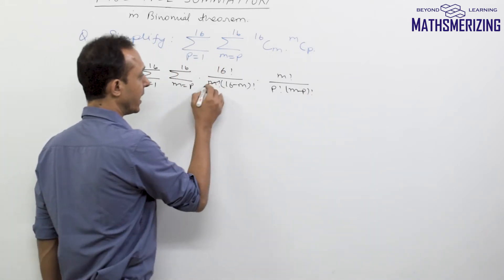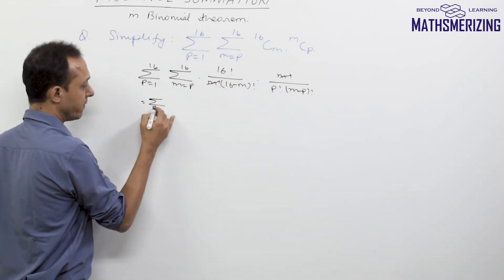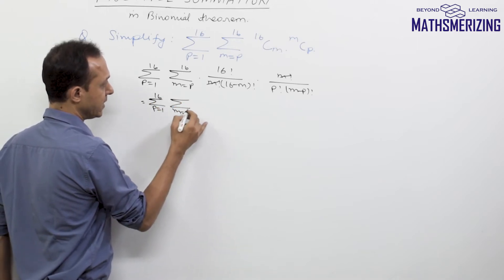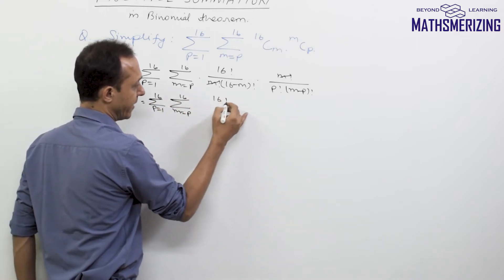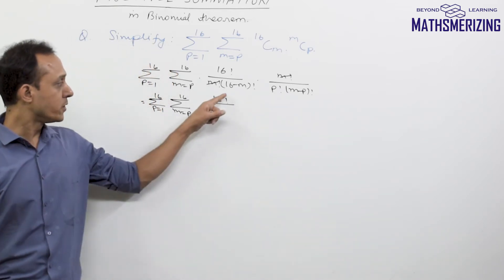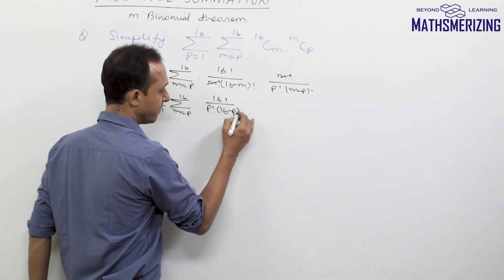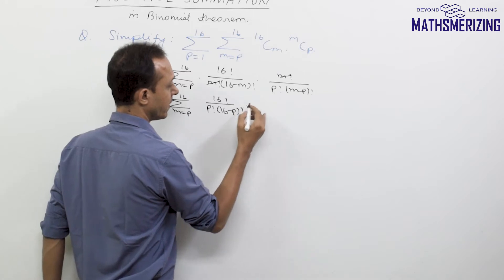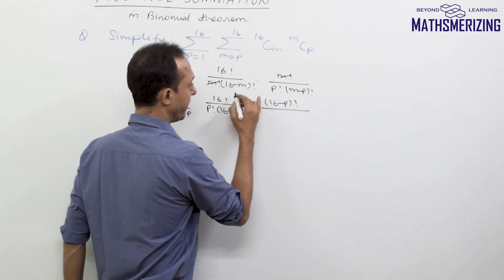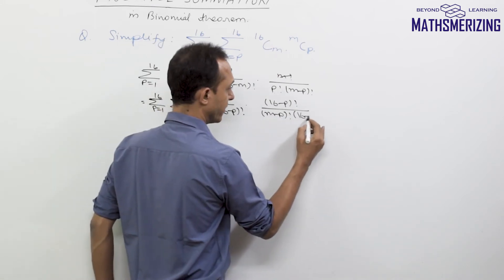I will cancel this factorial m and factorial m, and I will take this p here. So I will write it as summation p varies from 1 to 16, m varies from p to 16. I will write factorial 16, take this p with factorial 16 and change it to 16Cp. So I will multiply and divide by (16 minus p) factorial, and then it will be (m minus p) and (16 minus m) factorial.